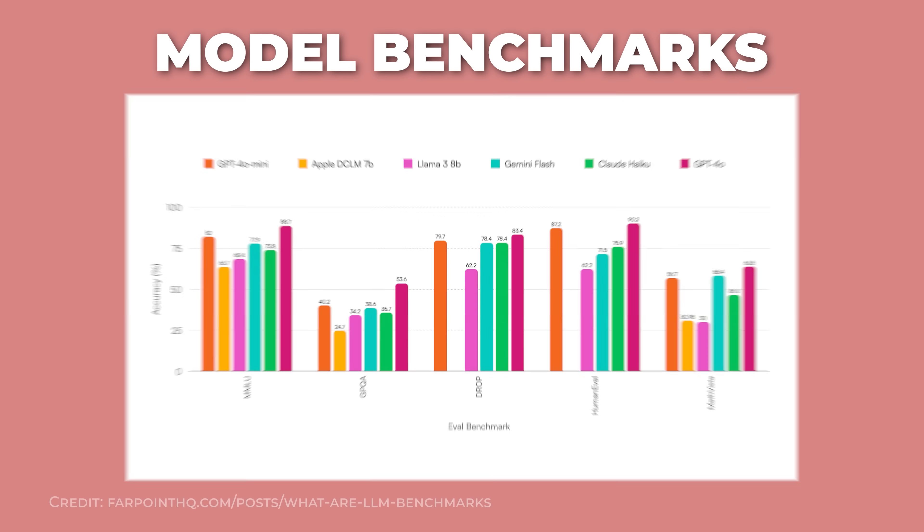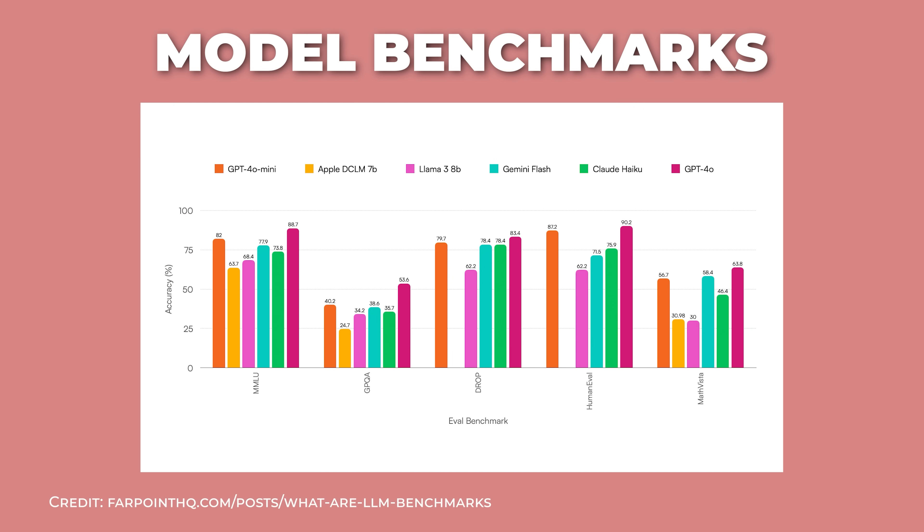So we can evaluate how good our system is by how fast it returns results. But how do we know if the actual models we're using are any good? One way is with model benchmarks — standardized tests that compare models on skills like math, coding, reading comprehension, and safety. They're helpful for tracking progress, but they're not the whole story. Real-world performance and human feedback still matter most. When researchers want to measure model performance more precisely, they use specific metrics. Here are three of the most common ones in AI engineering: perplexity, BLEU, and ROUGE.